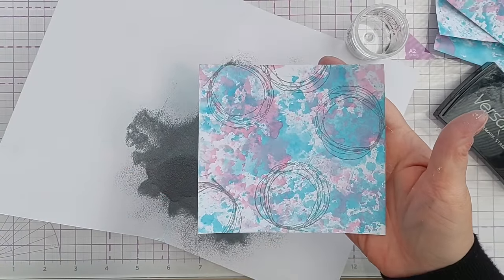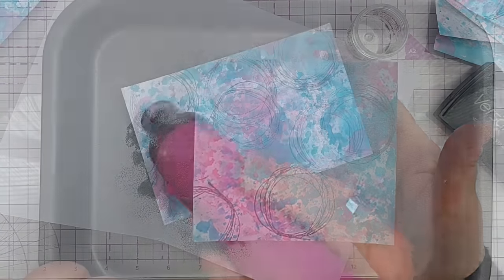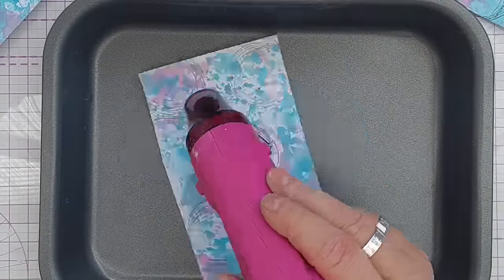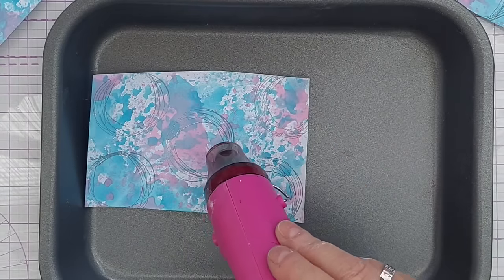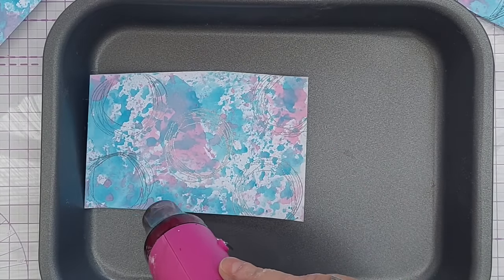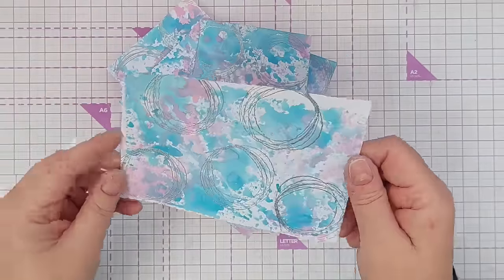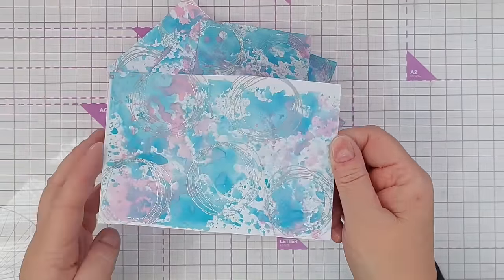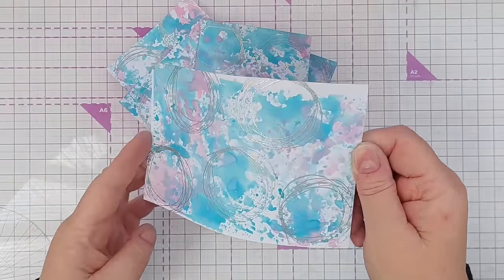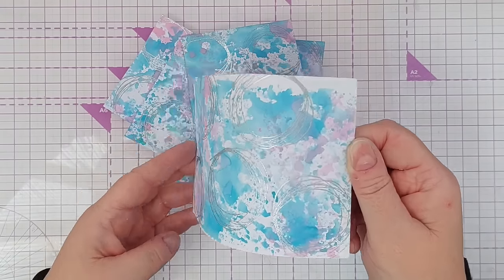So I will do this to all the pieces then heat them together. Right, there we have six really pretty pink and blue and silver pieces that we can cut from to make some cards.